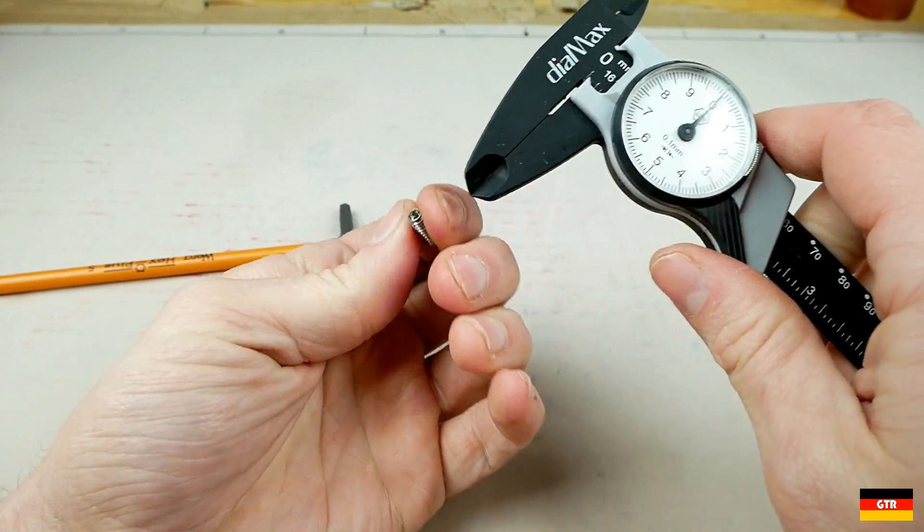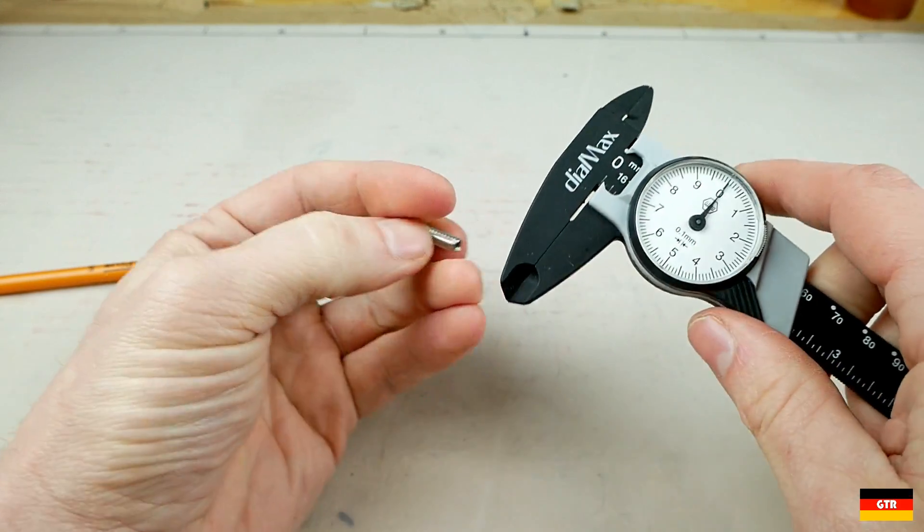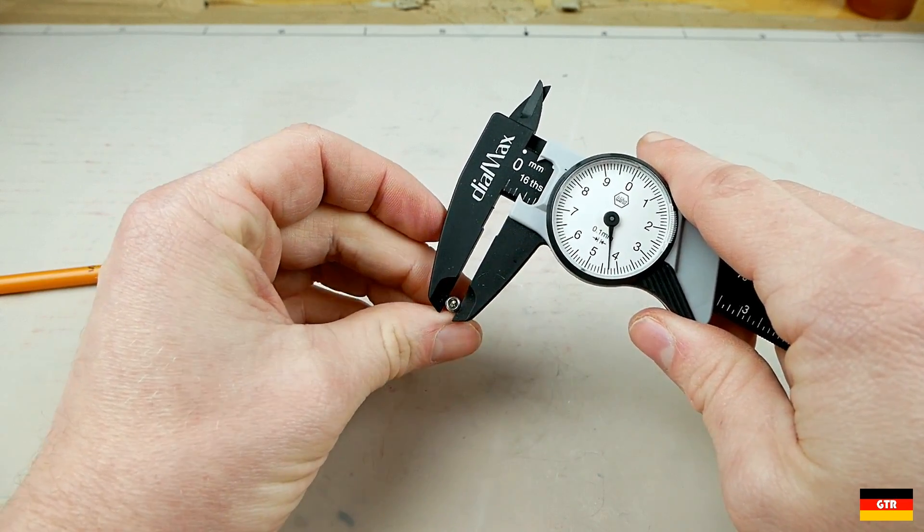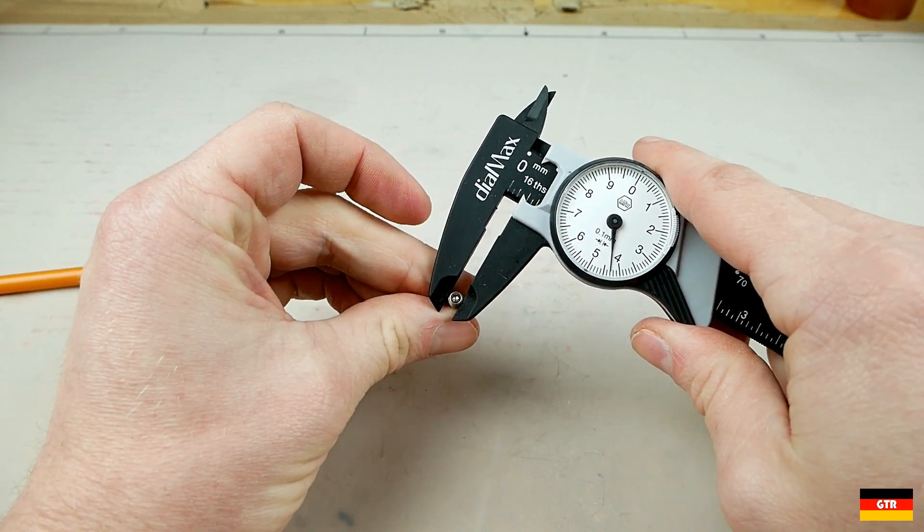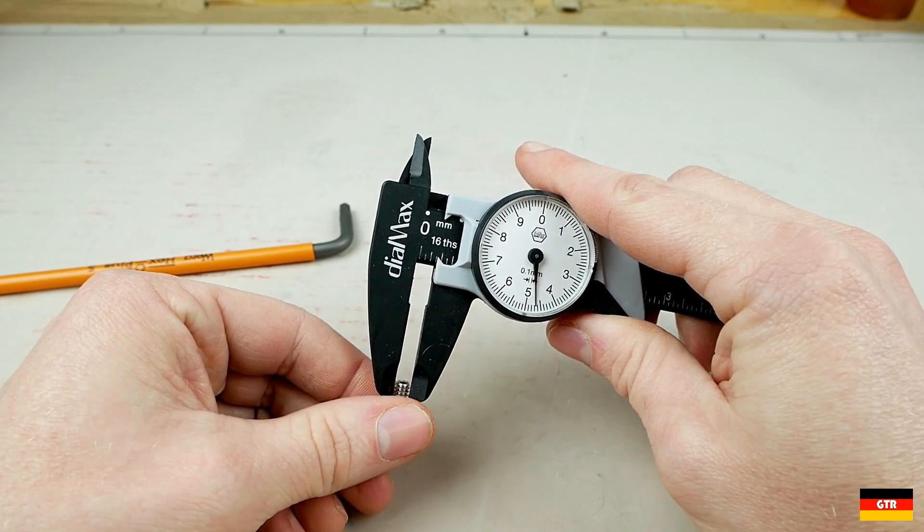The only type of fastener I can think of that might be a problem is something like a set screw like this. This is a 10-24 set screw and it requires a 3/32 inch hex drive.